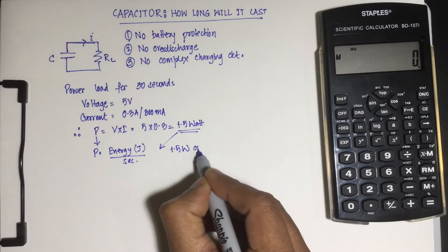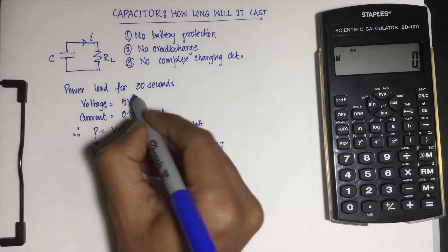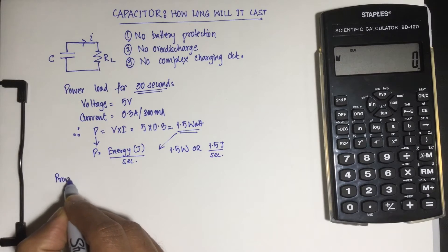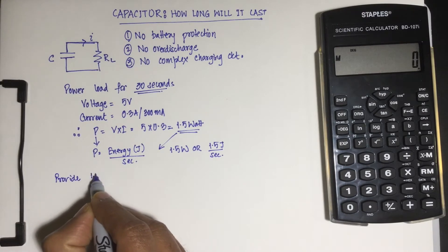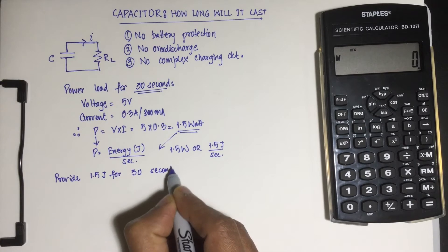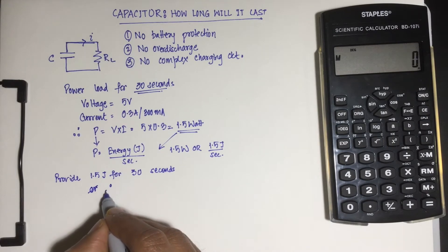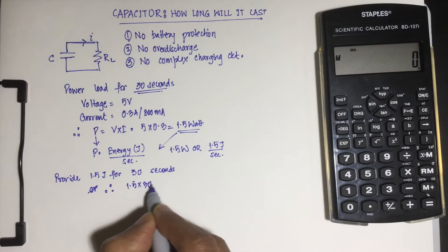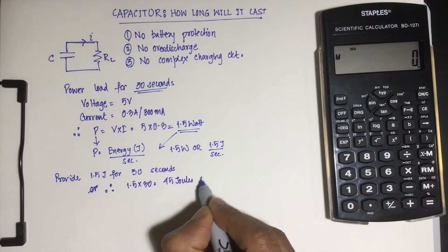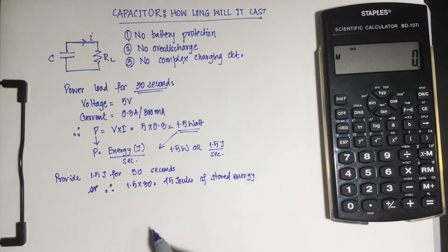So 1.5 watts can be written as 1.5 joules per second. We have to store about 1.5 joules of energy for or give 1.5 joules for 30 seconds continuously. So provide 1.5 joules for 30 seconds means 1.5 into 30 which is about 45 joules of stored energy.